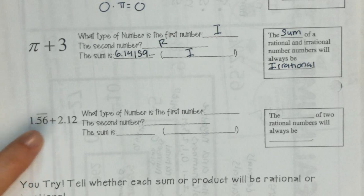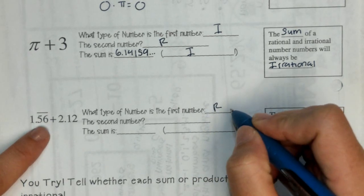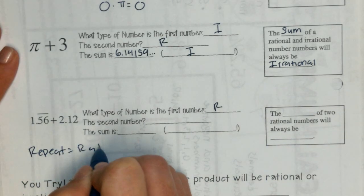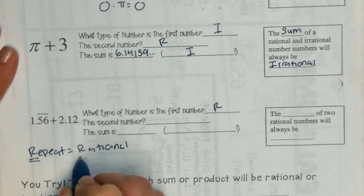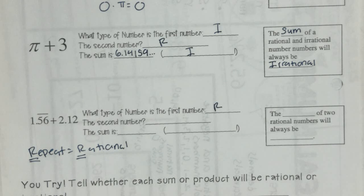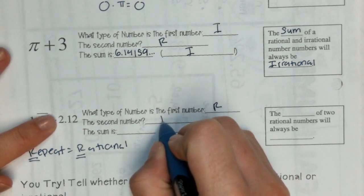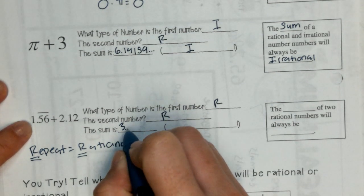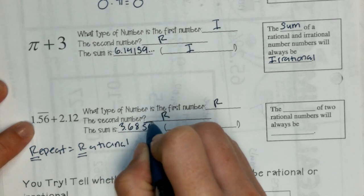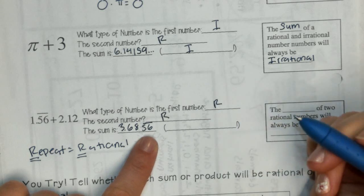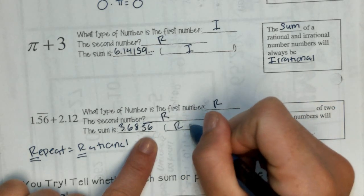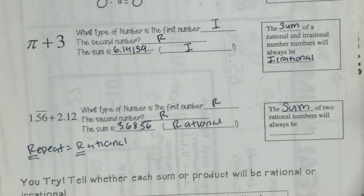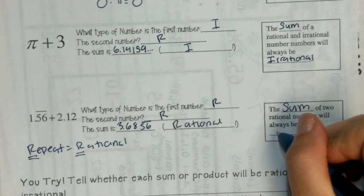And just like multiplying, when we add two rational numbers together, repeating decimals are rational. Remember that because they both start with the letter R. Repeating decimals are rational. The second number, terminating decimals, is rational. It's a nice number. The sum is 3.6856, and that part repeats. Repeating decimals, even though it's only the end part that's repeating, is also rational. So, when we add two rational numbers together, no matter what those rational numbers are, the sum will always be rational.